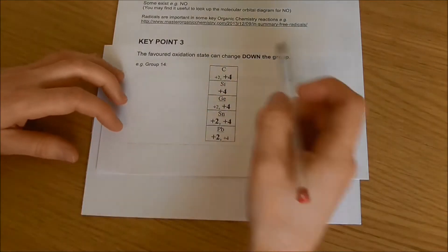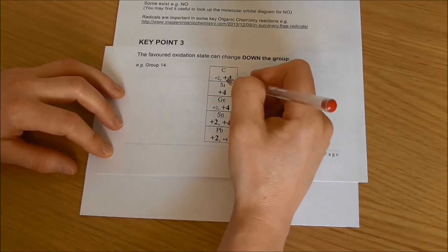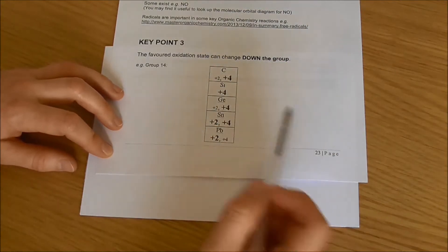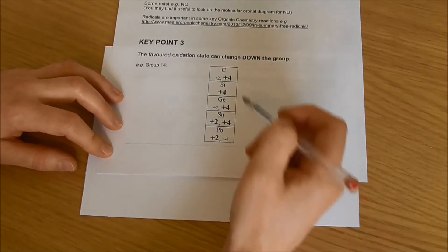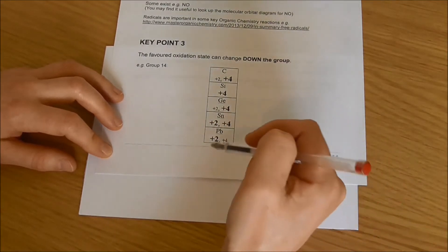In this case for example we've got carbon, silicon, germanium, tin and lead. Most of them can form plus 2 or plus 4 oxidation states, the exception is silicon. As we go down the group we can see the oxidation states in bold, these are the favored ones, change.